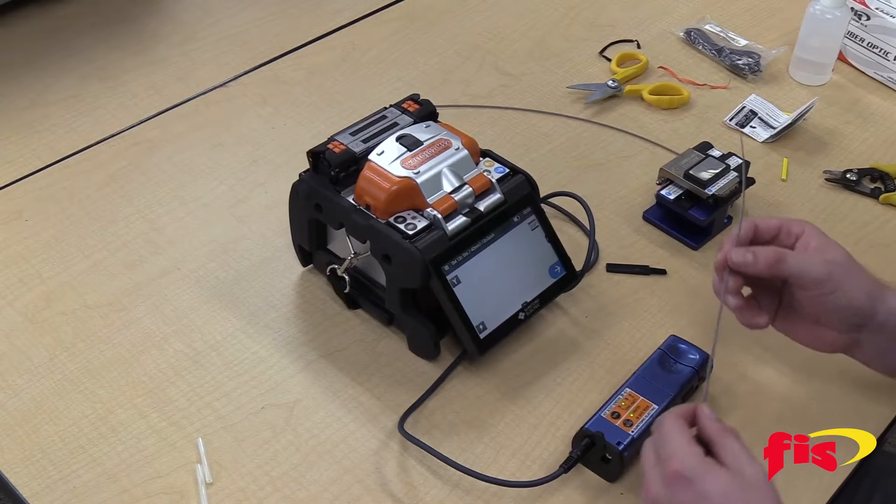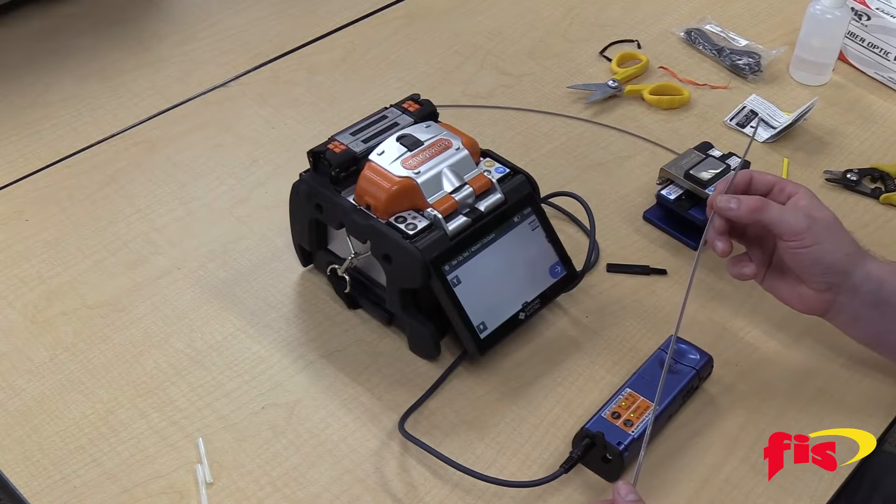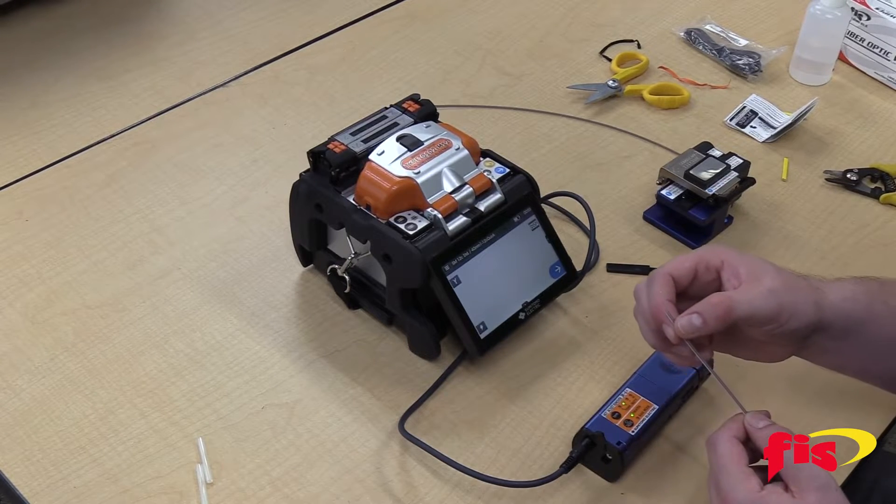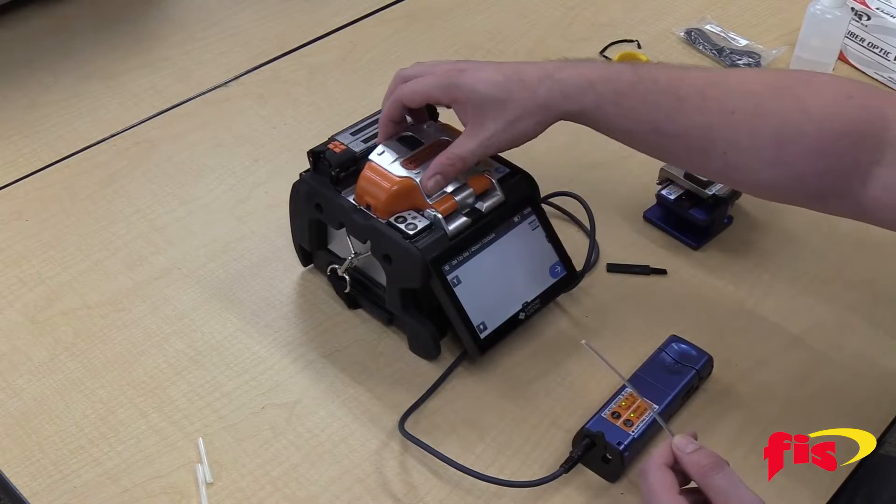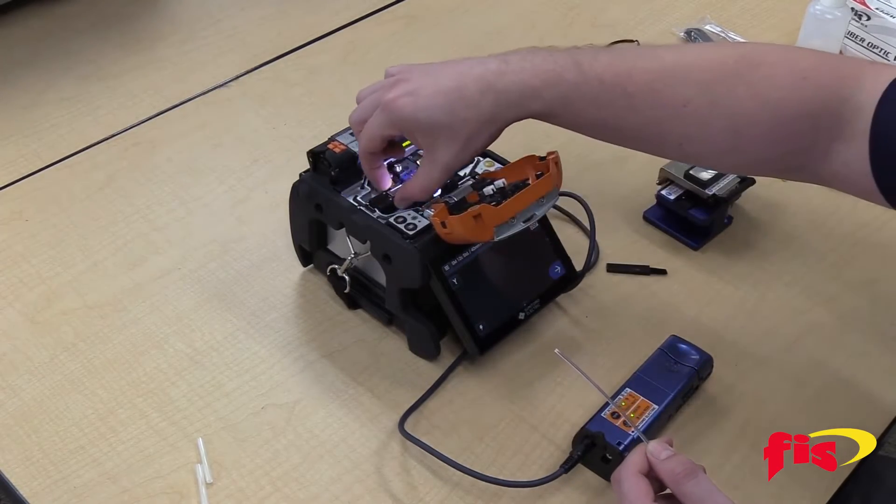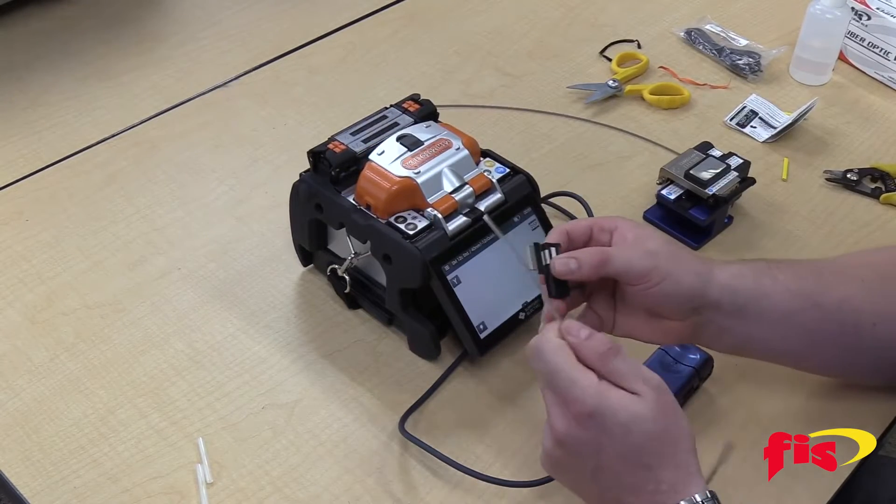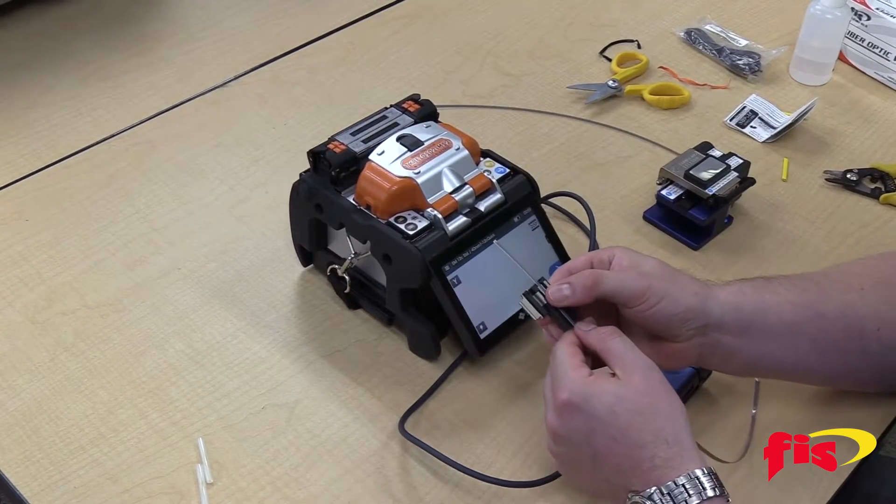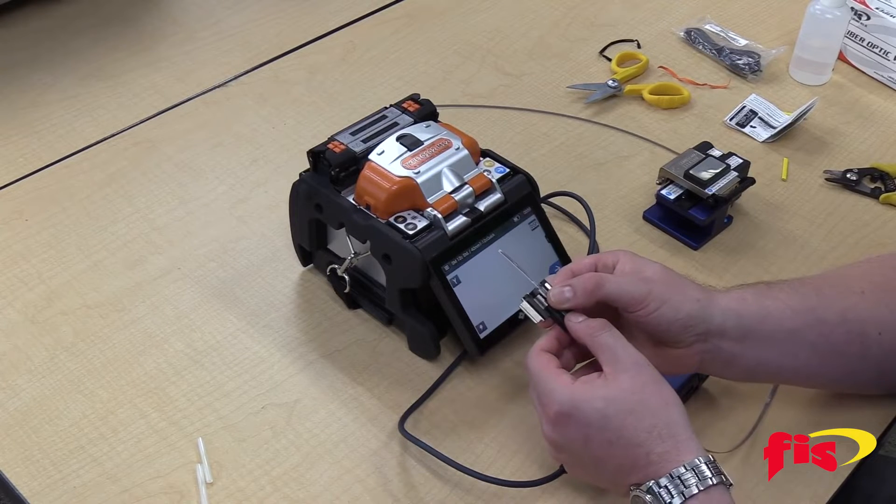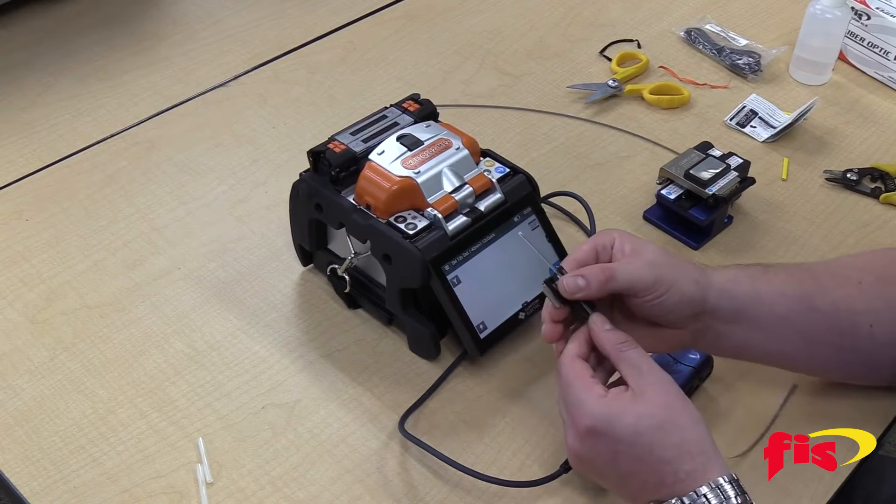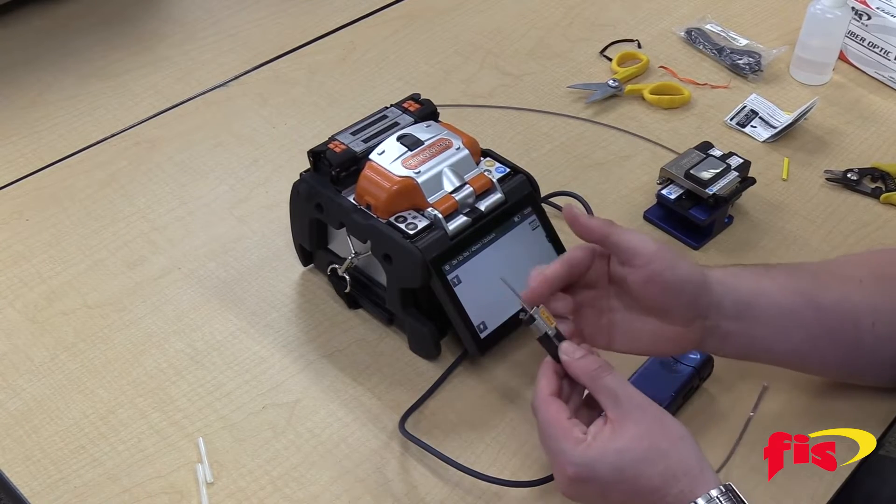First I'll take a piece of 12 fiber ribbon, and the first thing we have to do is strip off the binding glue or matrix that holds the fibers together. So I'm going to open up the hood, take one of the removable holders from this Sumitomo splicer, and you're going to want to place the fiber into the holder and leave about an inch to an inch and a half or so sticking out.